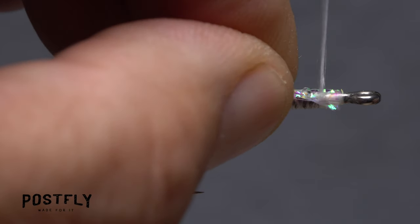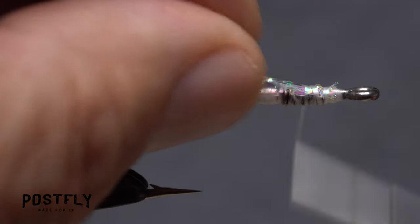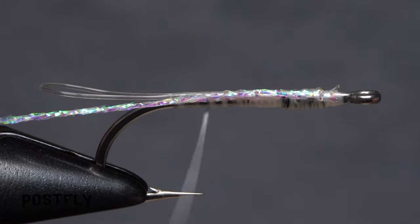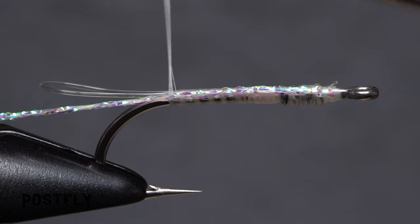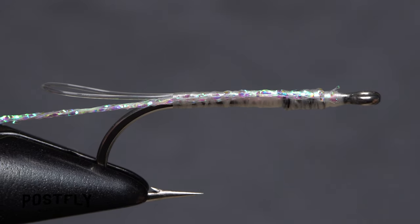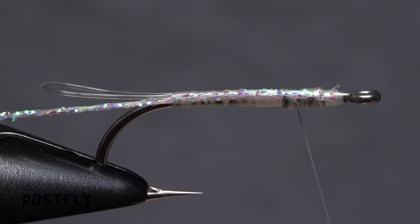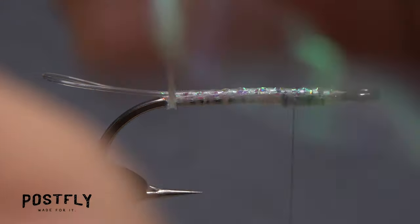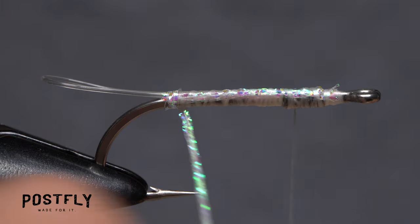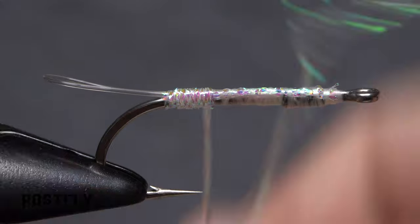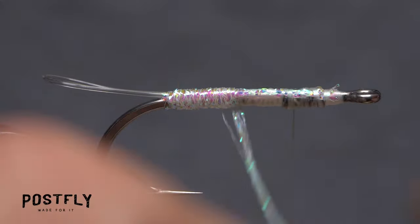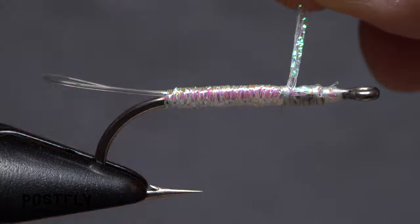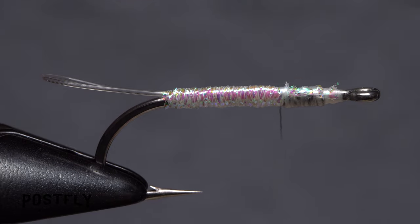Pull the braid first underneath the mono loop then around the hook and over top of the mono. Keep taking touching wraps forward with the braid to build up a nice even shiny body on the fly. When you reach your tying thread, use it to anchor the braid and snip the excess off close.